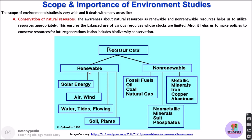Renewable resources are those whose stocks are not limited and can be renewed again and again — for example, solar energy, wind energy, air, water, tides, flowing water, soil, and plants. On the other hand, non-renewable resources have limited stocks and their formation takes millions of years — for example, fossil fuels. If their stocks are limited and we do not use them judiciously, their stocks may get exhausted. So we must devise and follow conservation strategies. The balanced use of these resources is very crucial to prevent them from getting exhausted.